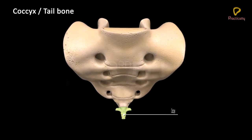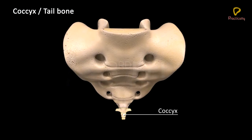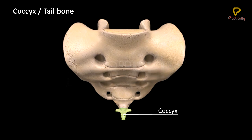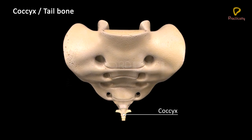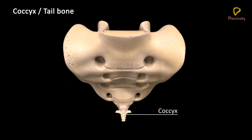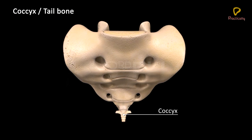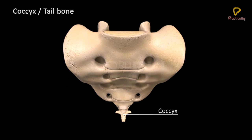Coccyx or tailbone: It is a small, triangular, vestigial bone formed by the fusion of four nodule-like coccygeal vertebrae. It is attached to the base of the sacrum.